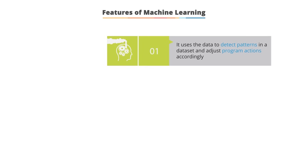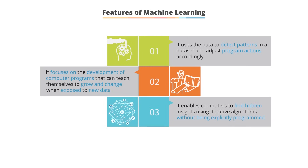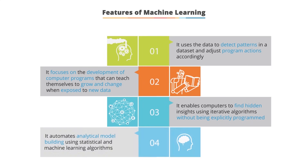Machine learning uses data to detect patterns in a dataset and adjust program actions accordingly. Pattern detection is the classification of data based on knowledge already gained or statistical information extracted from patterns. It focuses on developing computer programs that can teach themselves to grow and change when exposed to new data using reinforcement learning. It uses external feedback to teach the system to change its internal workings, enables computers to find hidden insights using iterative algorithms, and automates analytical model building using statistical and machine learning algorithms that express patterns as mathematical equations.